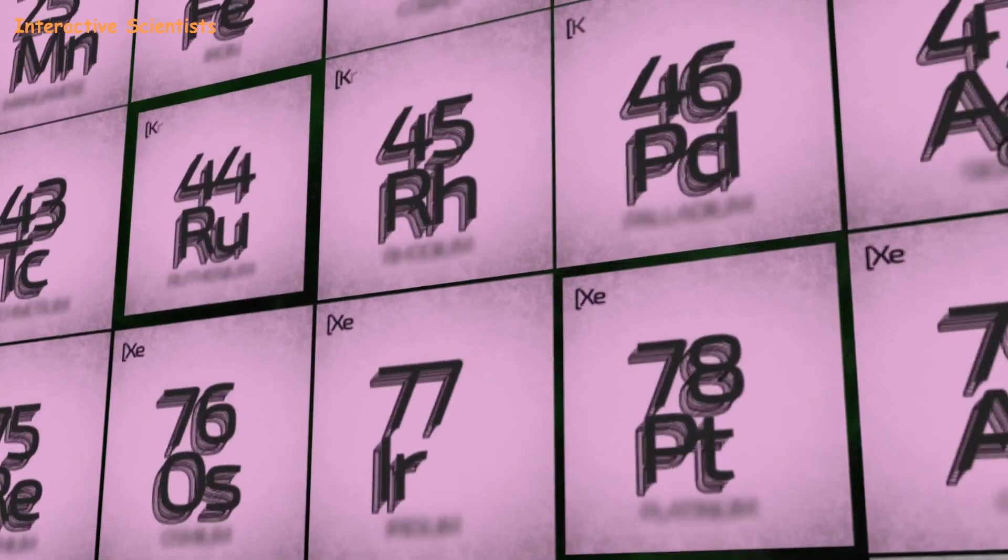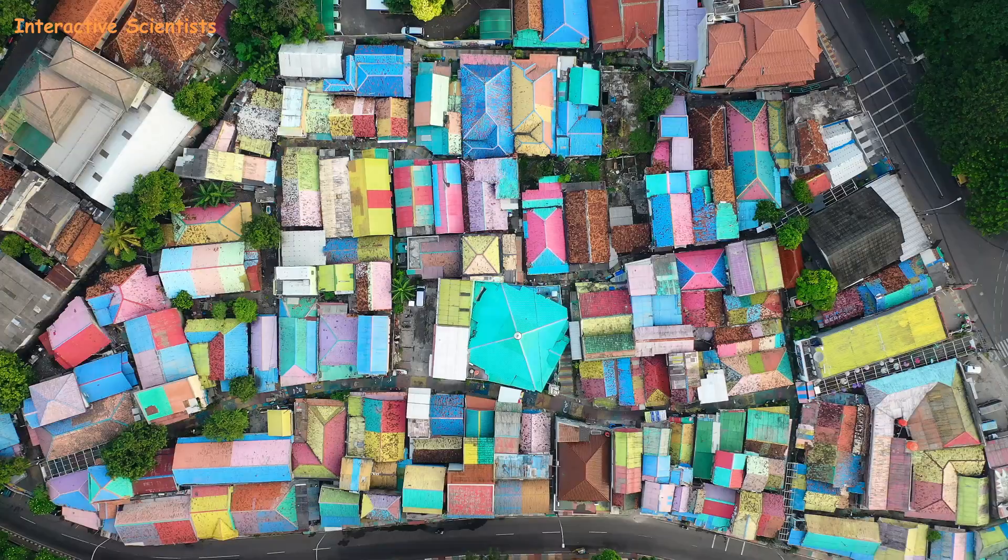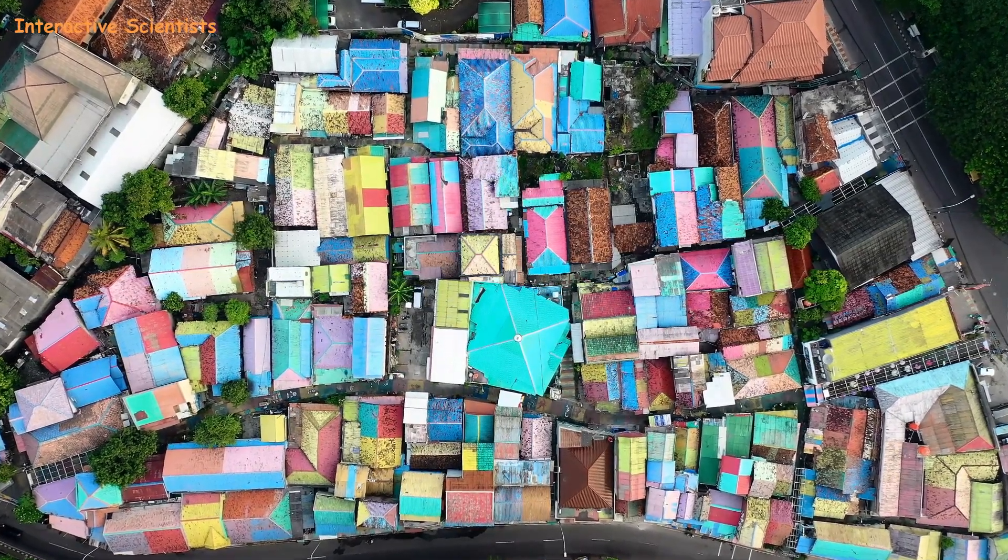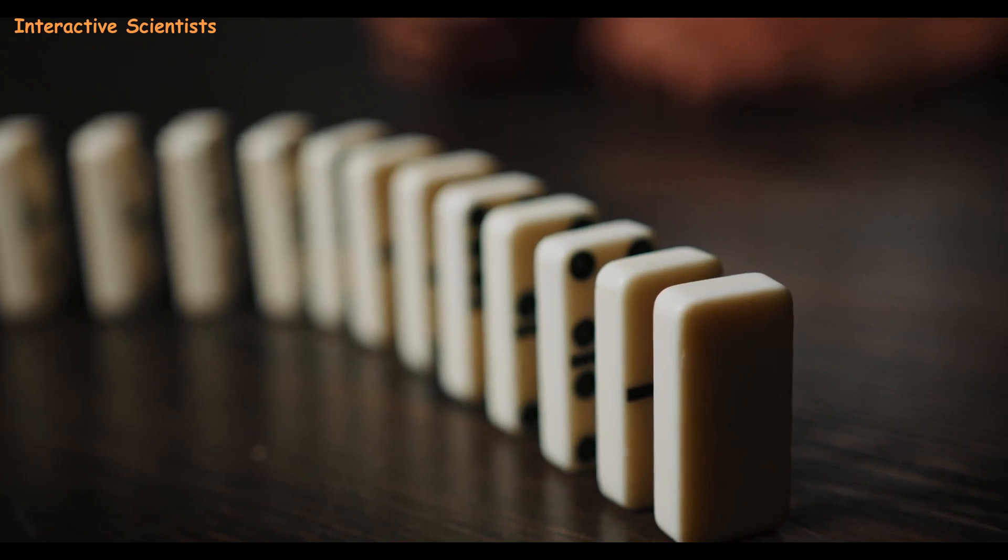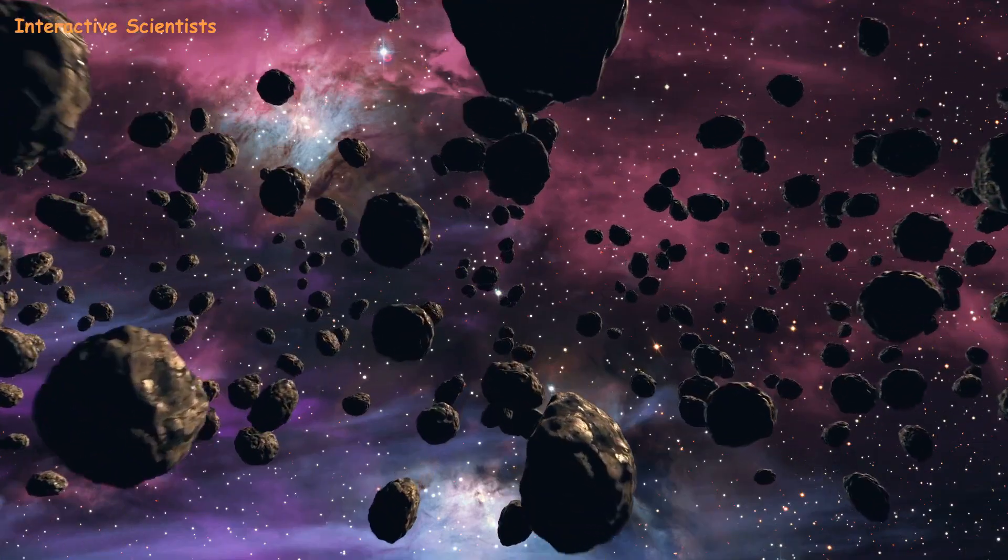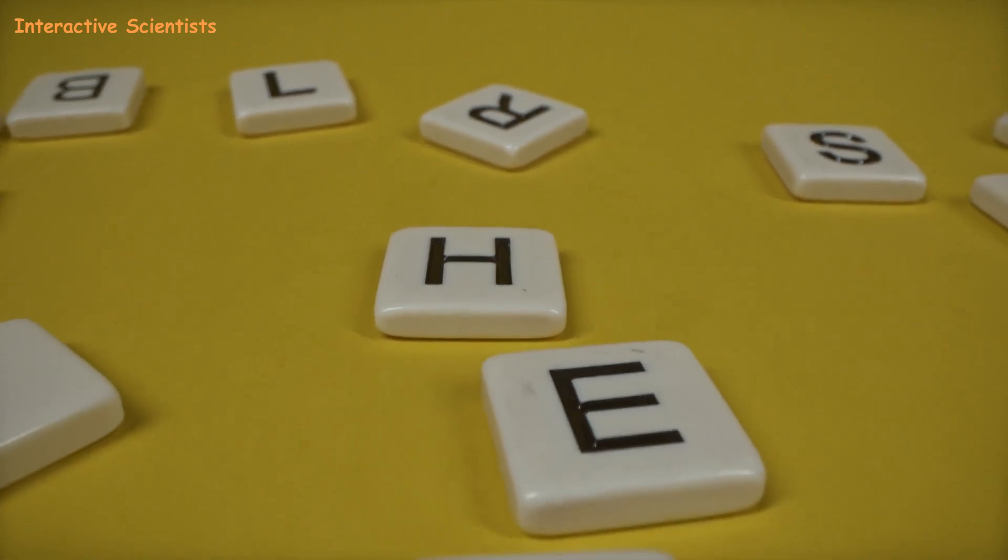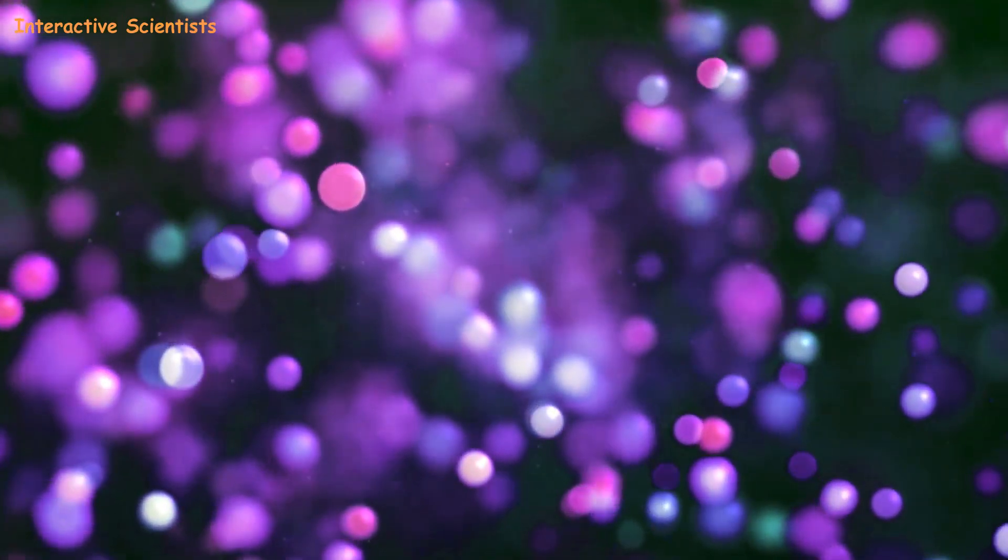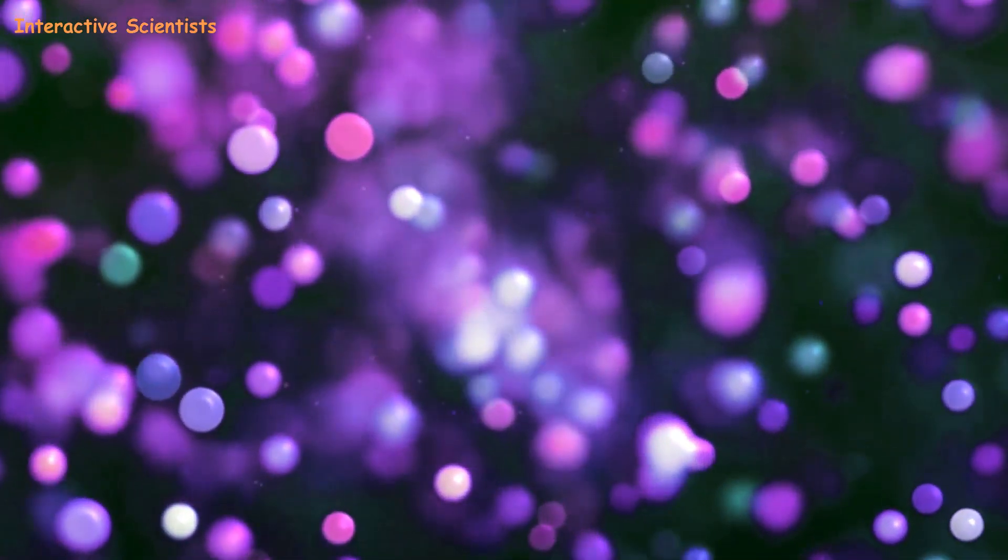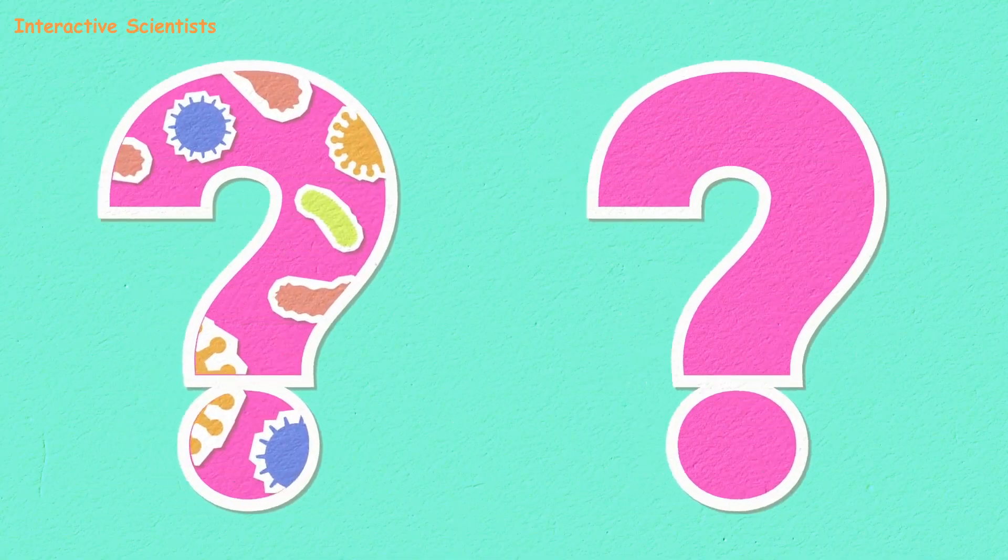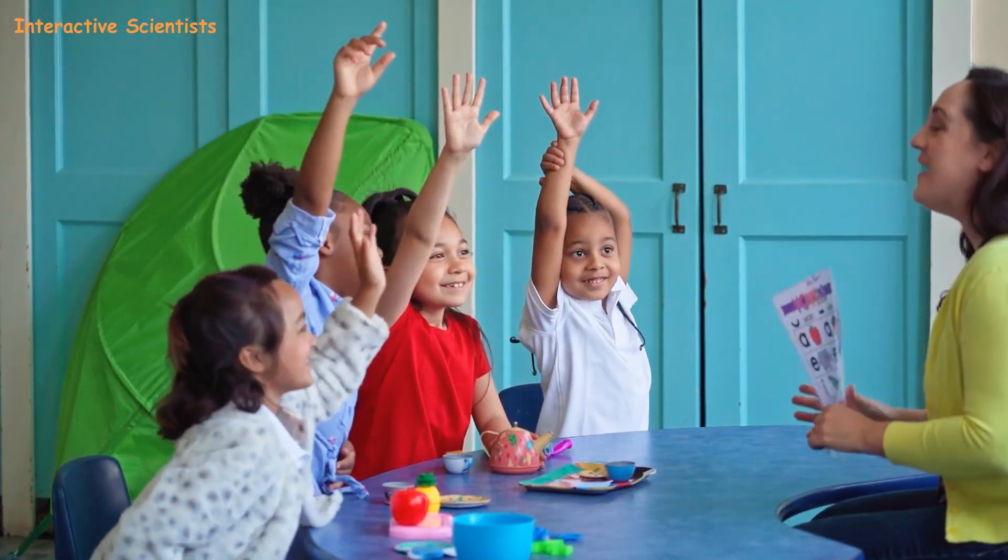So what is this thing called the periodic table? Imagine it as a big colorful puzzle made up of tiny pieces. Each piece represents an element, like building blocks of the universe. Elements are like the alphabet of the universe, they are the purest substances that make up everything we see, touch, and even breathe. Can you name any element you've heard of before? Raise your hand and shout it out.